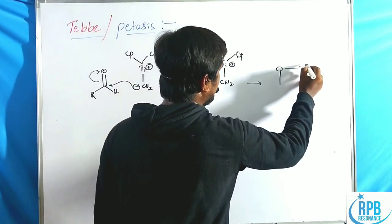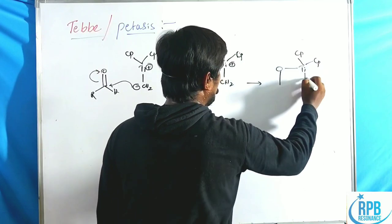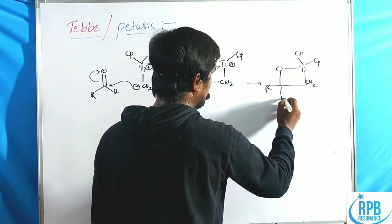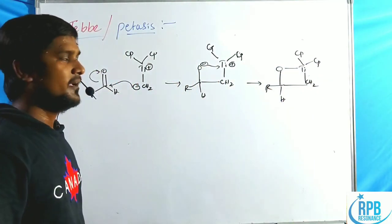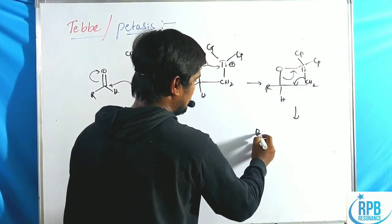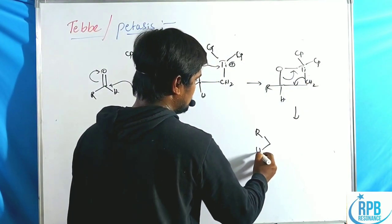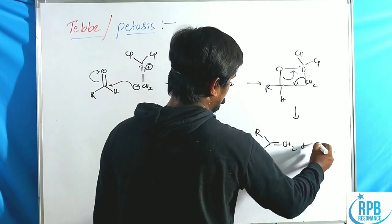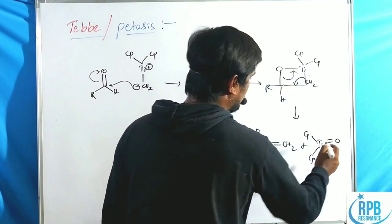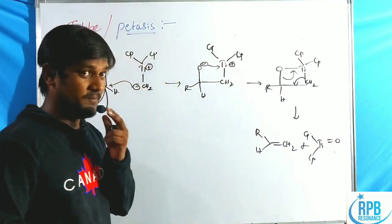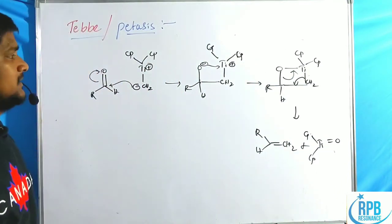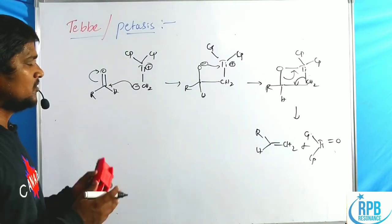The oxametallacyclobutane intermediate — containing O–Ti(Cp)₂–CH₂ and the R and H substituents — then undergoes retrocycloaddition to give the alkene product (R–CH=CH₂) and a Cp₂Ti=O byproduct. This is the simplified mechanism of Tebbe and Petasis olefination.